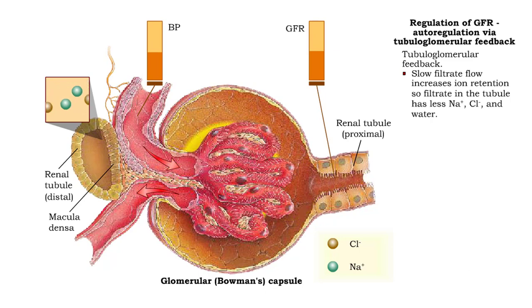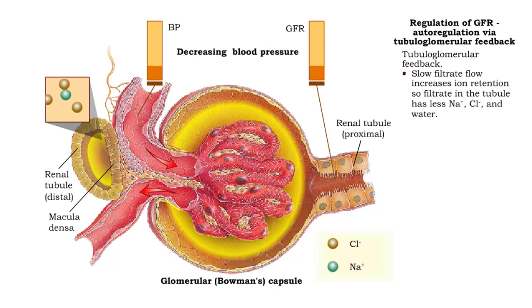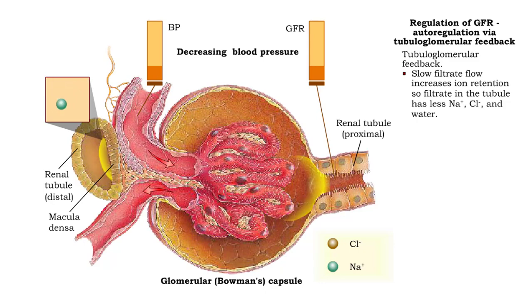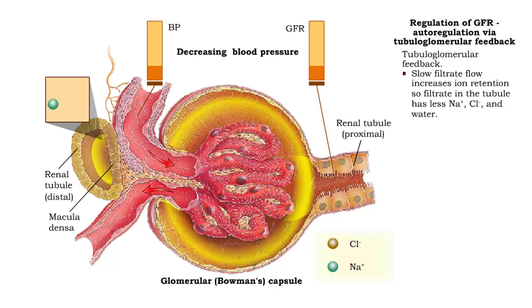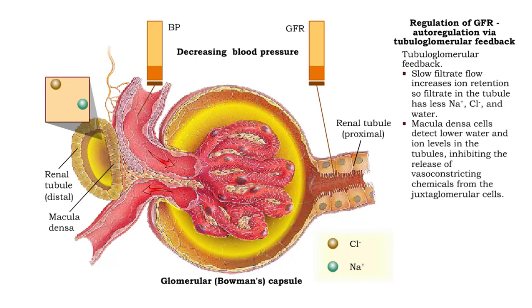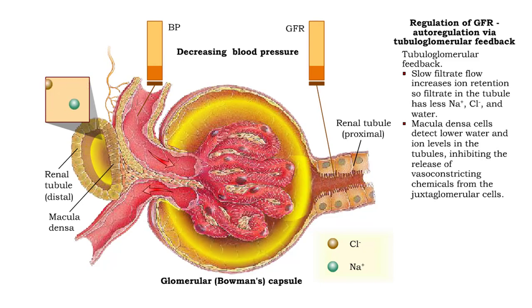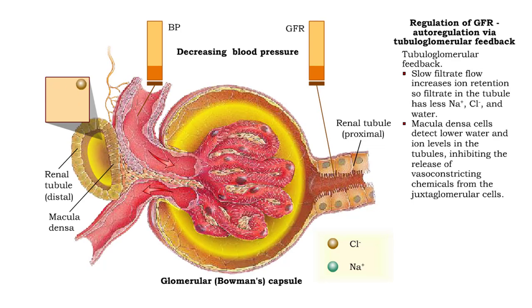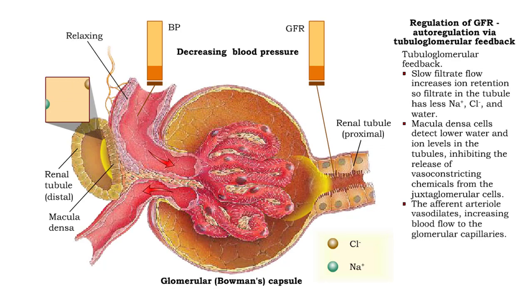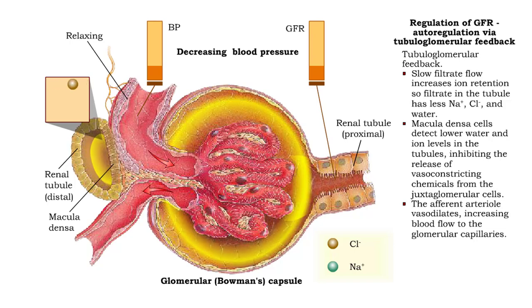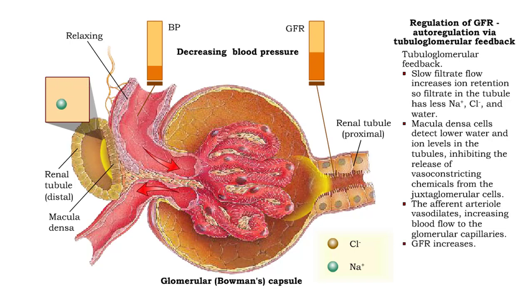When blood pressure is below normal, slow filtrate flow increases ion retention, so filtrate in the distal convoluted tubule has less sodium ions, chlorine ions, and water. Macula densa cells detect lower water and ion levels in the tubule and inhibit the release of vasoconstricting chemicals from the juxtaglomerular cells. The afferent arteriole vasodilates, increasing blood flow to the glomerular capillaries. Glomerular filtration rate increases.